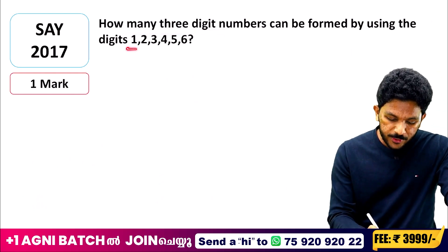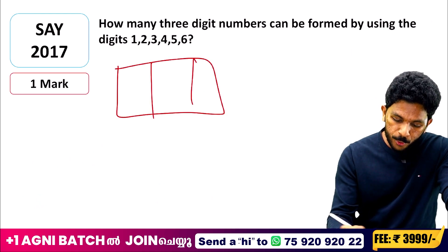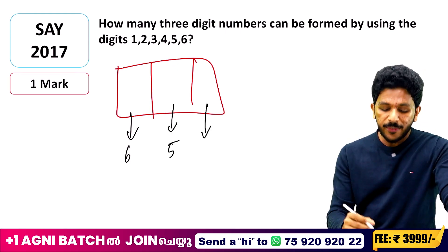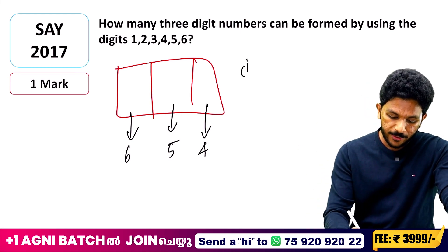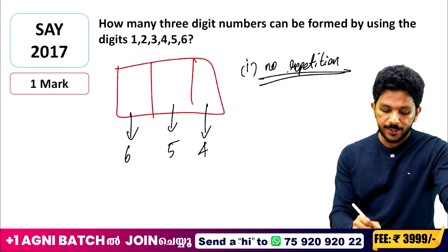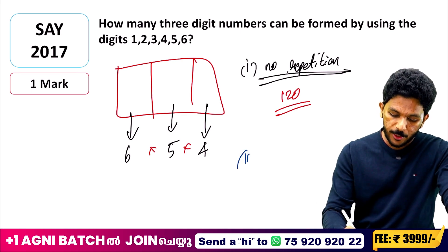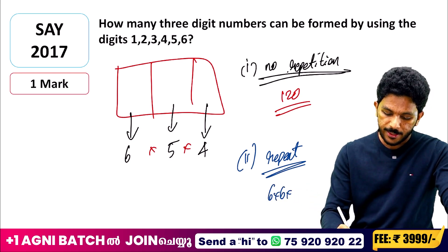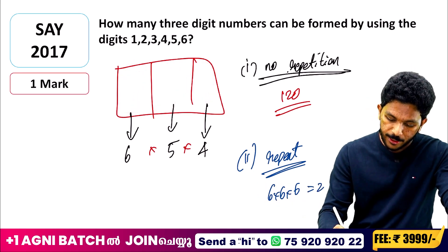How many 3-digit numbers can be formed using the numbers 3, 4, 5, 6, 7, 8? If there is no repetition: 6 × 5 × 4 = 120. If repetition is allowed: 6 × 6 × 6 = 216. These are the two answers.